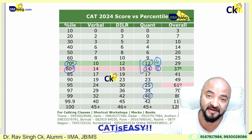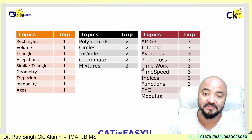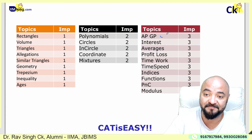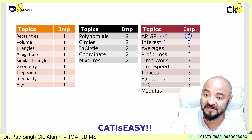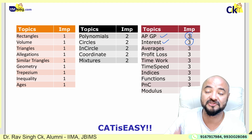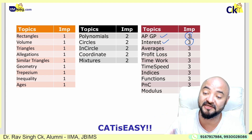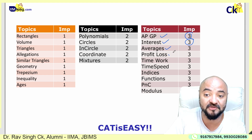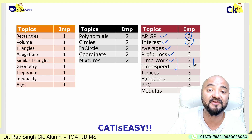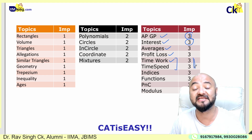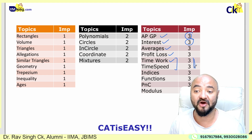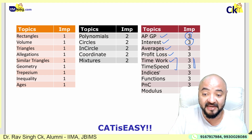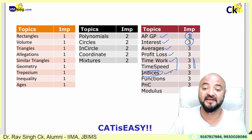Moving on to more important topics: AP-GP — three questions, one question every slot. Simple interest and compound interest — three questions, one question in every slot. Averages — three questions. Profit and loss, time and work, time speed distance — their weightage has drastically gone down. There was a time when 3-4 questions came from time and work and time speed distance, but now it's down to only one question per slot. Indices have gone up to three questions.